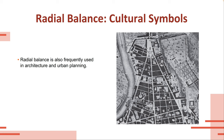Radial balance also comes up in architecture and city planning. This is an old map of Italy — we have a central plaza, and most cities, even downtown Bangor, have a central location with everything radiating or building off of that. So we generally have a radial balance in city planning — you can see how everything radiates off of one central point.